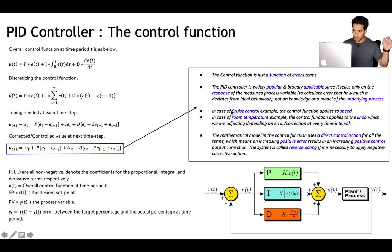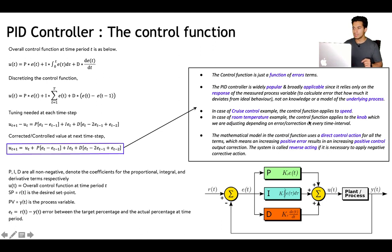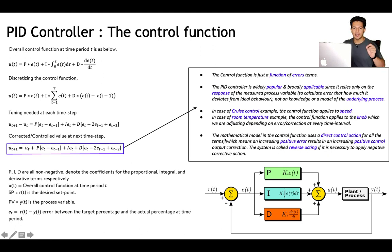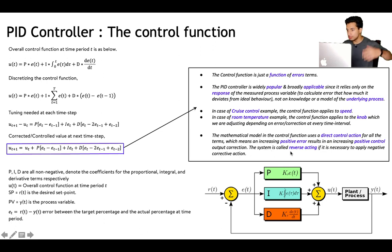In the cruise control example, the control function applies to speed. For room temperature, the control function applies to the knob we adjust depending on the error or correction at every time interval. The mathematical model uses a direct control action, meaning an increasing positive error results in an increasing positive control output correction. The system is called reverse-acting if it needs to apply negative corrective action.